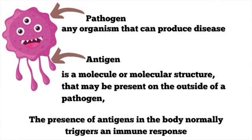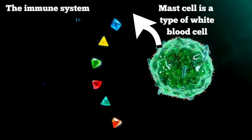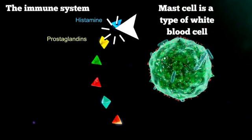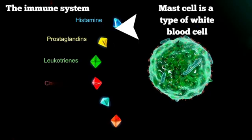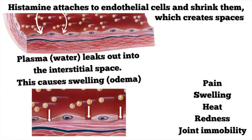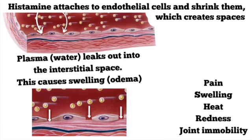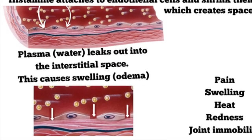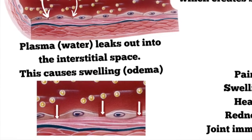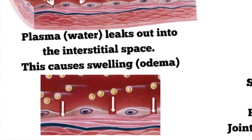When an antigen enters the body — normally attached to a bacteria — mast cells detect it and release histamine and other inflammatory agents. Histamine attaches to the endothelial cells and it shrinks them. If you imagine these cells buffered up against each other, histamine just shrinks them a little bit, creating a space.